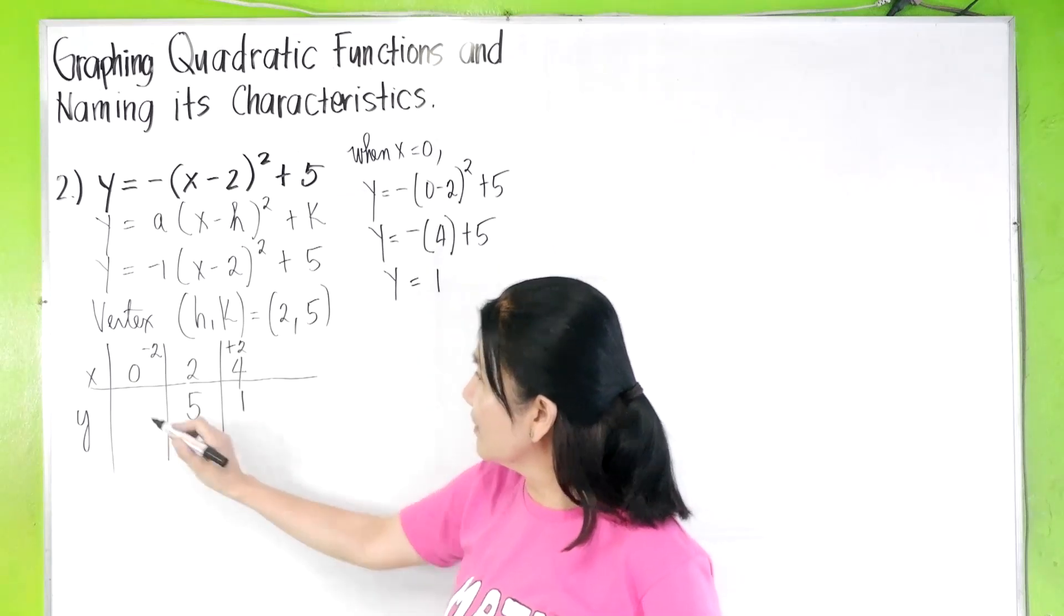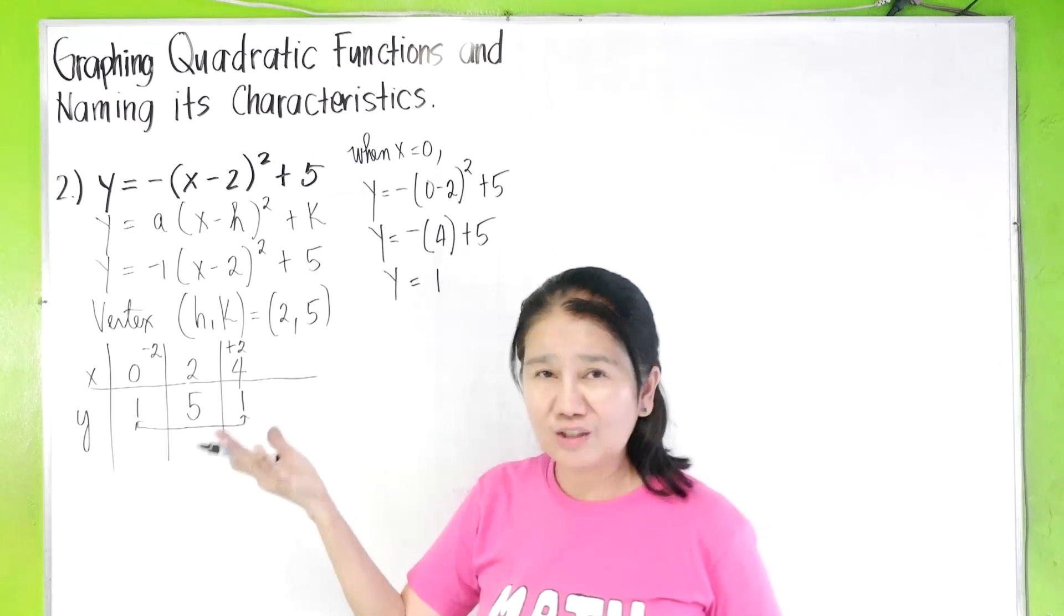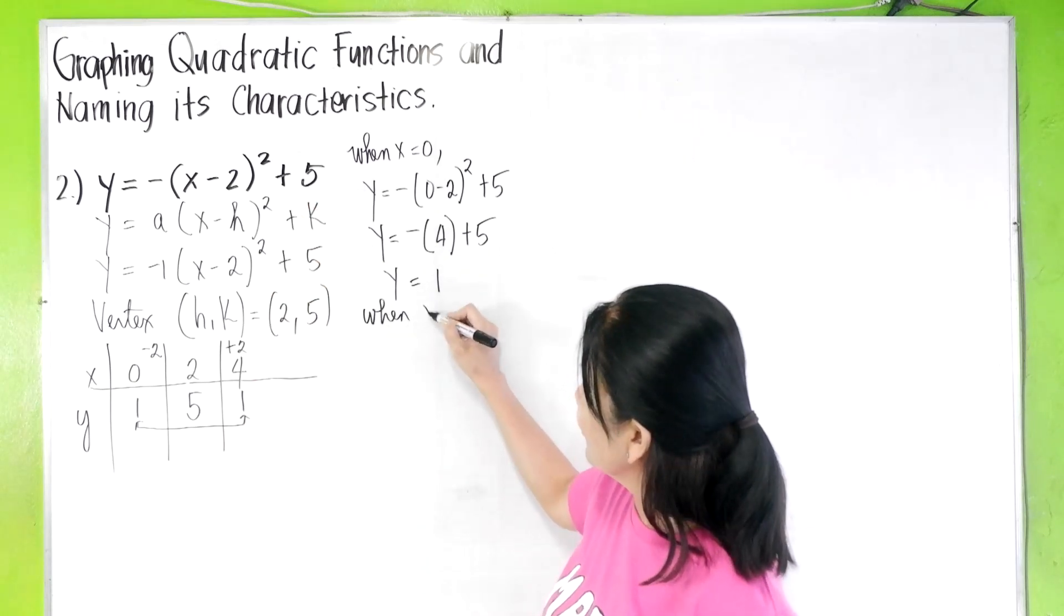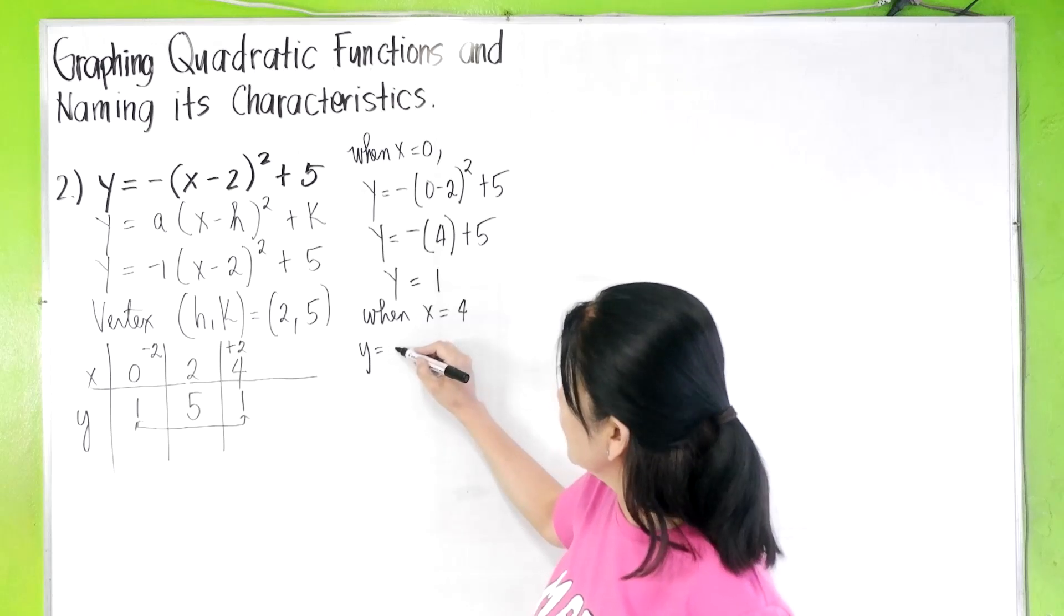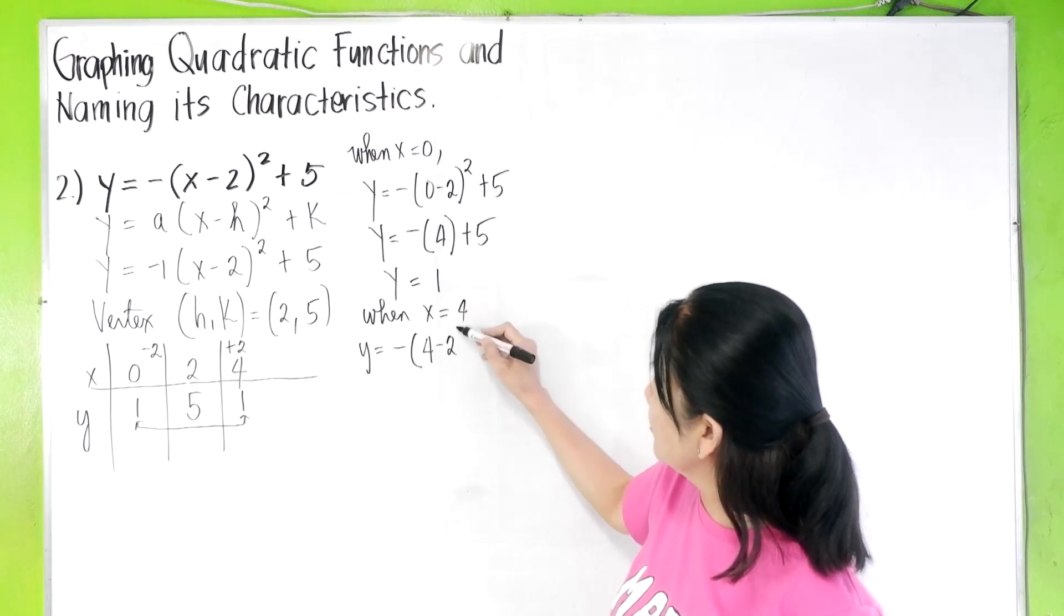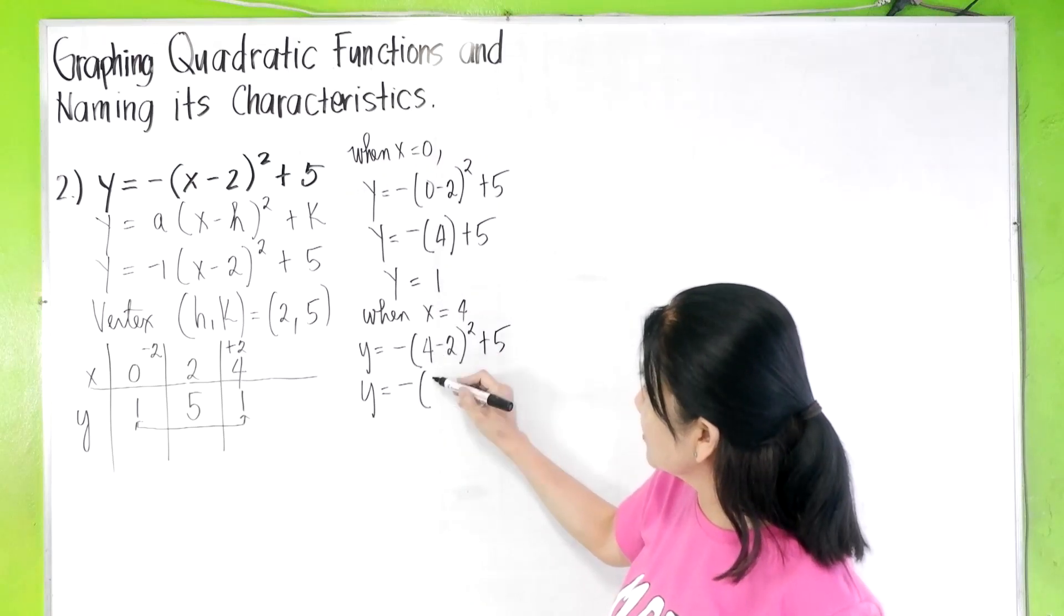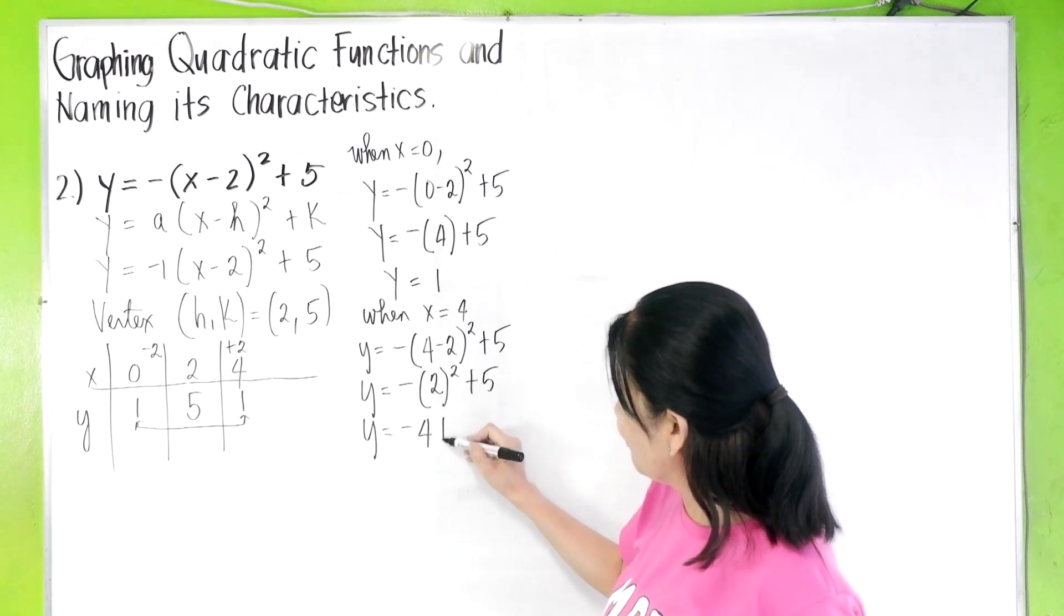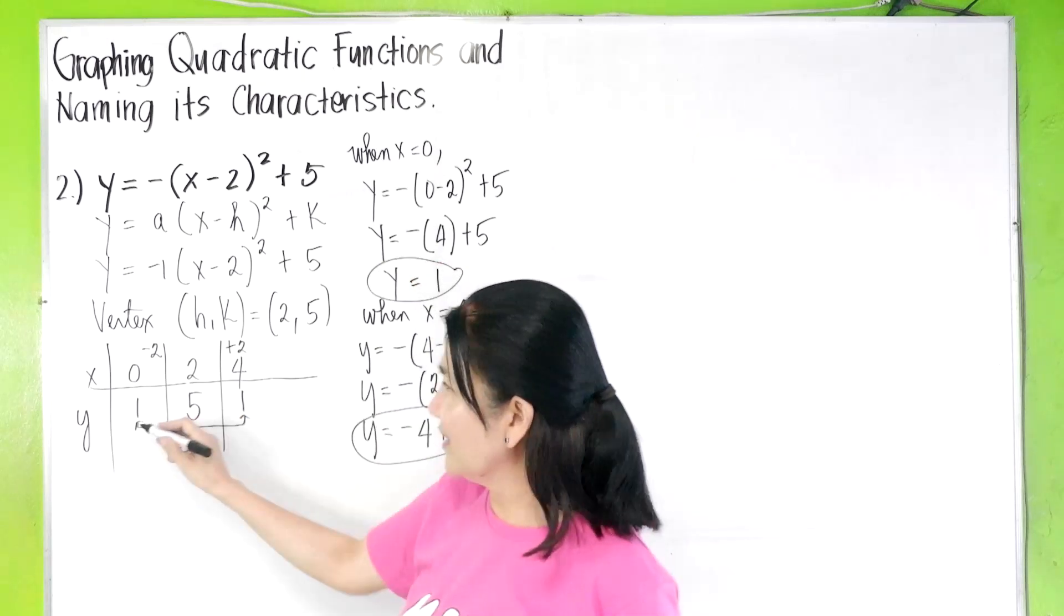Now, this is one, this is one, and we have learned that if this is one, this will also be one. If you're not comfortable, then all you have to do is to substitute the values. Let us try that. When x is equal to four, what do we get here? So y is equal to negative four, substitute four here. So you have four minus two quantity squared plus five. This is y is equal to negative four minus two is two, squared plus five. You get y is negative four plus five, also gives you a one. One, one. There, we'll do it automatically.